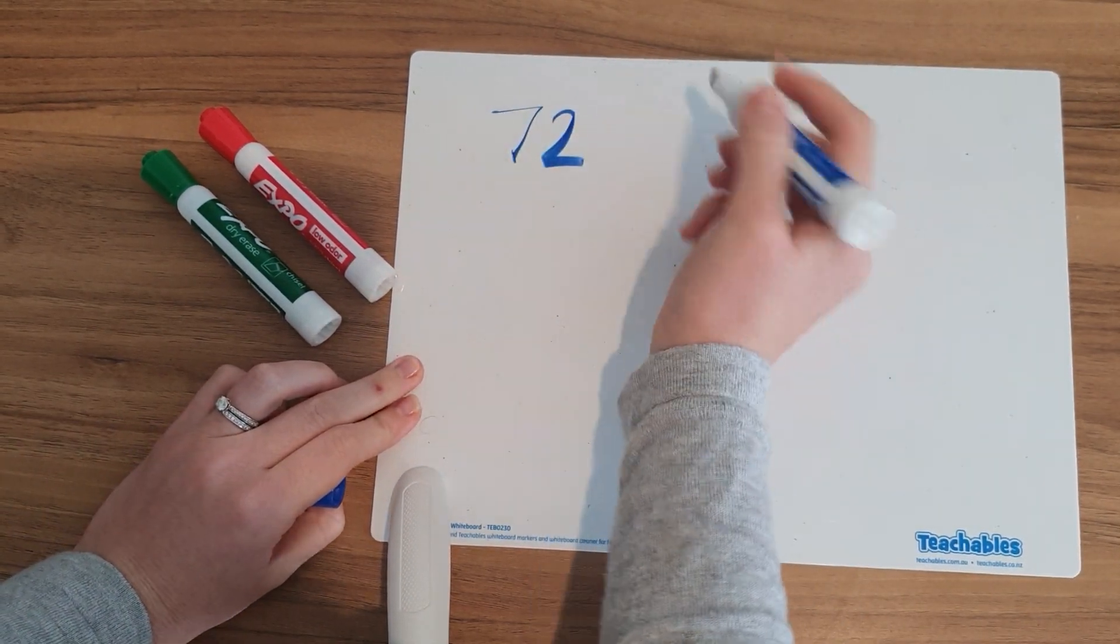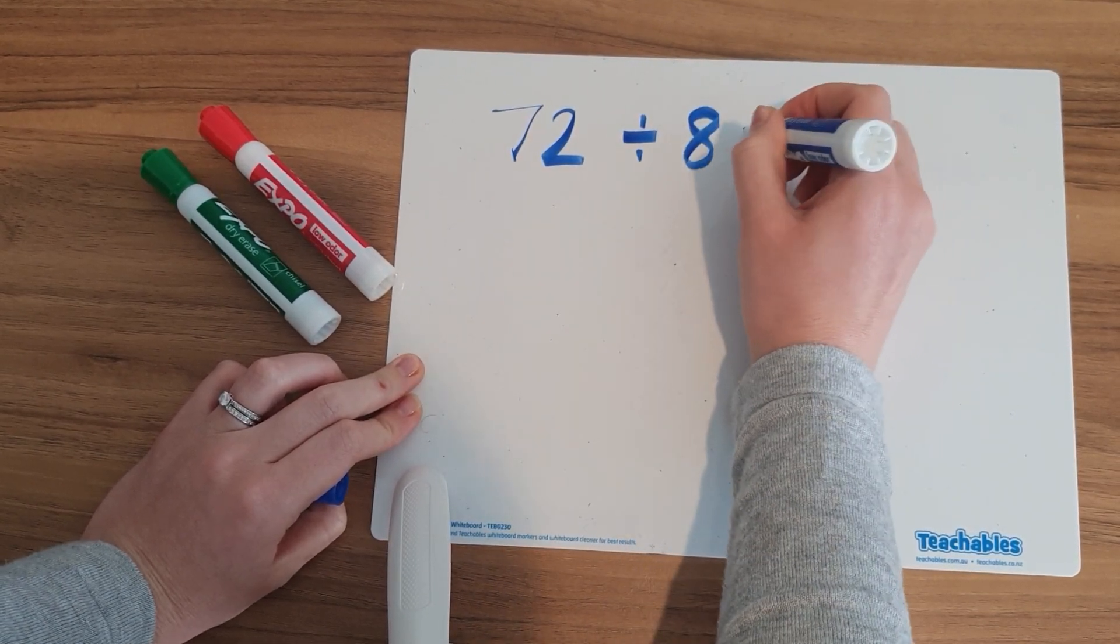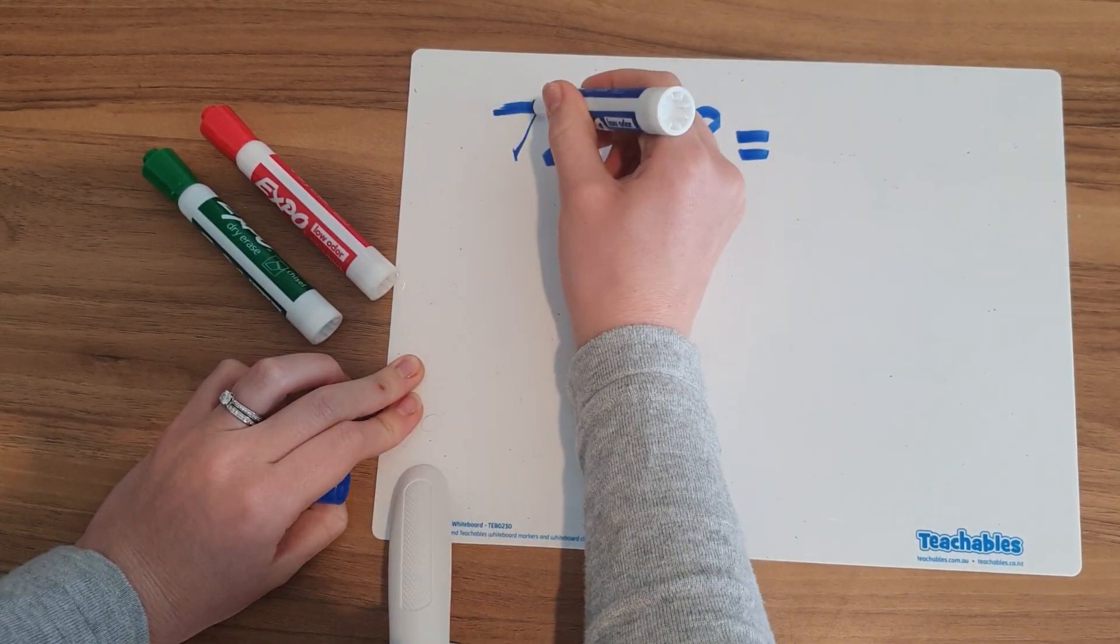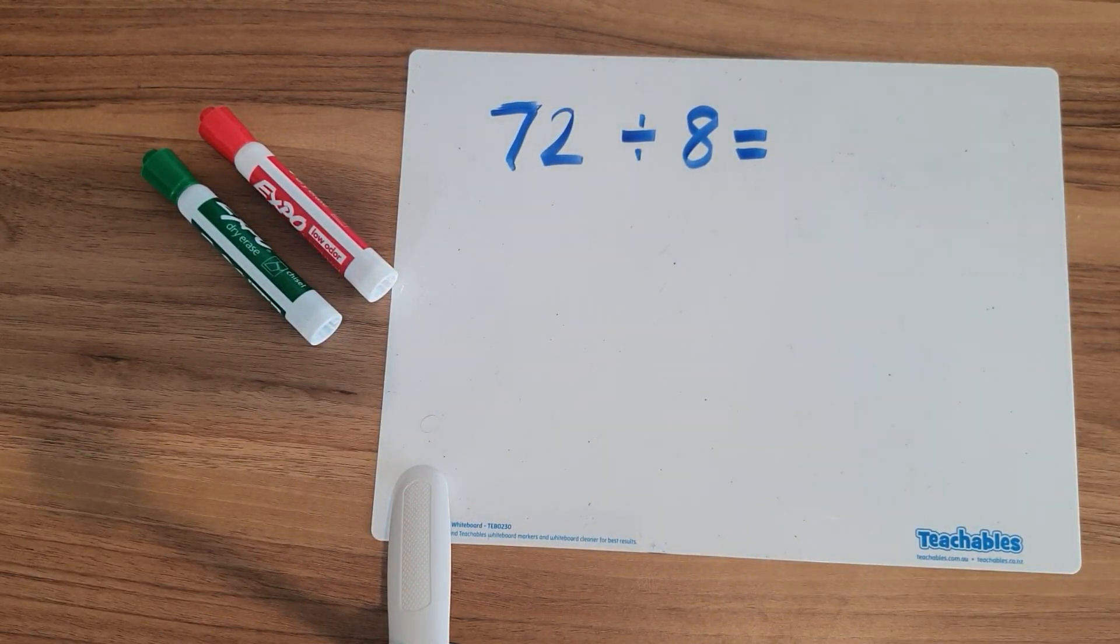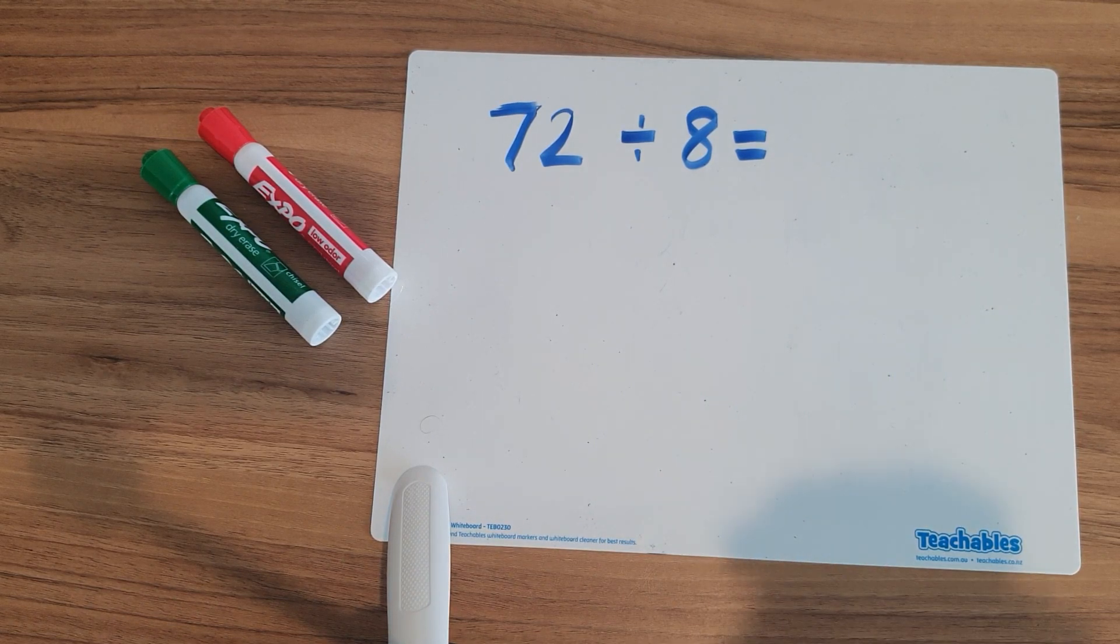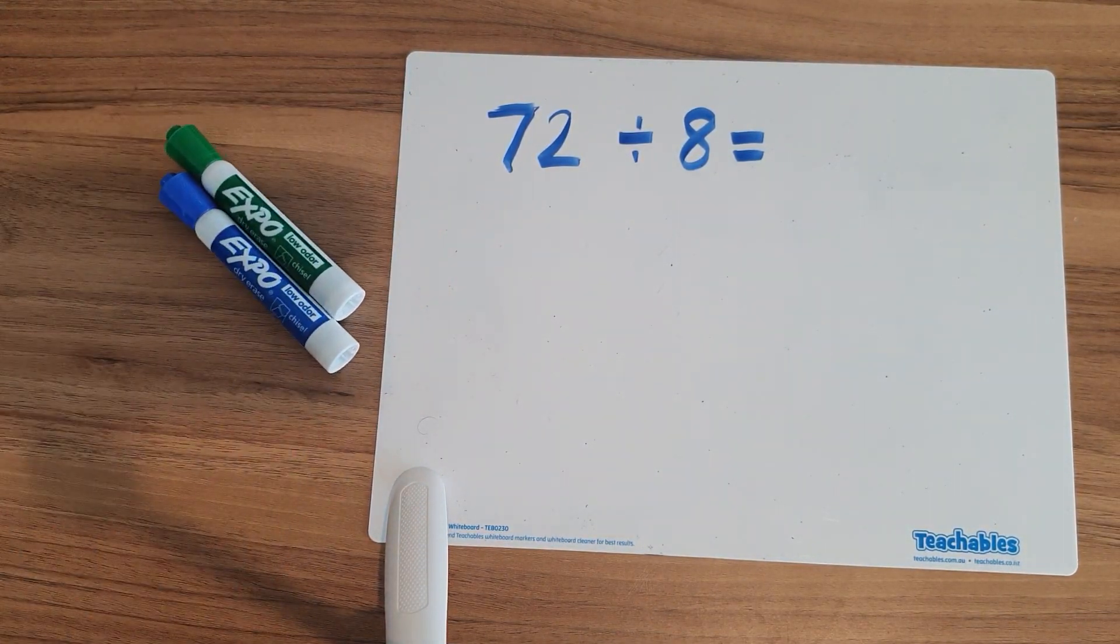So 72 divided by 8 equals, so let me just go over that, 72 divided by 8 equals, and we're going to use our knowledge of our multiplication facts to go through and work this out.